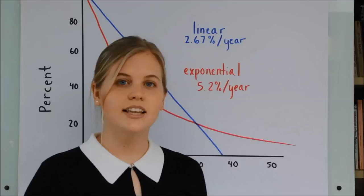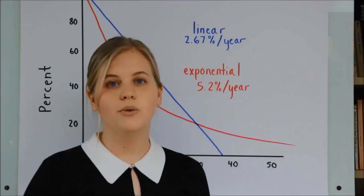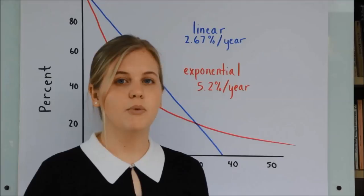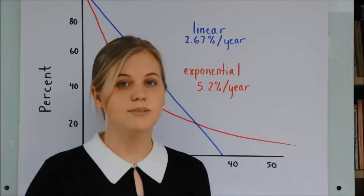There are two important points. First, these two curves yield exactly the same total emissions, so they are equivalent for climate change, which depends only on total emissions. Secondly, the rate of reduction in the more realistic linear case is less than 3% per year. It is plausible.